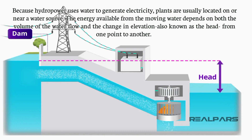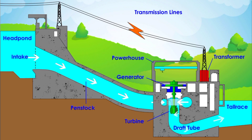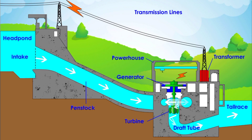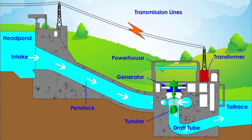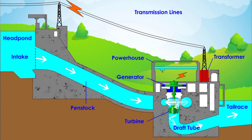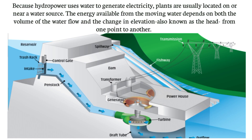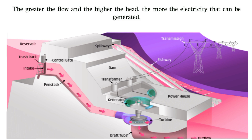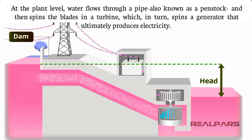The energy available from the moving water depends on both the volume of the water flow and the change in elevation — also known as the head — from one point to another. The greater the flow and the higher the head, the more electricity that can be generated.